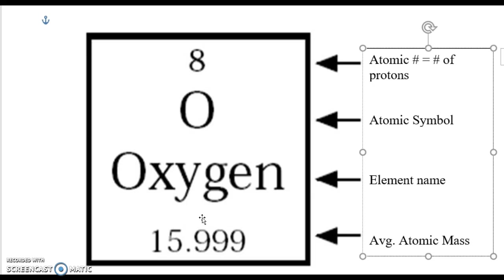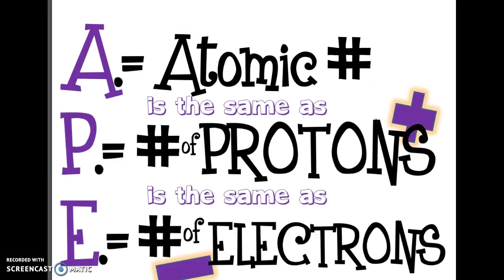So if you see something like 9.0481 on the periodic table, what that's saying is it's rare but possible to have a variant with a different number of neutrons. Basically, I'm going to round up to the more common isotope. There are two acronyms I want you to remember when looking at a periodic table: APE and MAN. APE stands for: the Atomic number is the same as the number of Protons, which is the same as the number of Electrons.